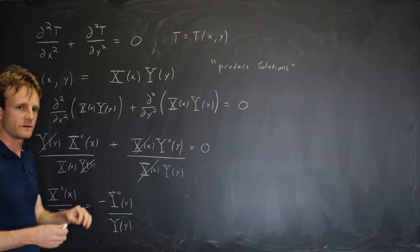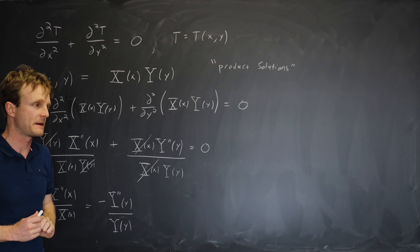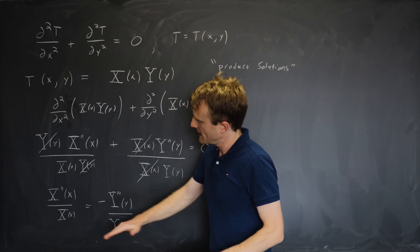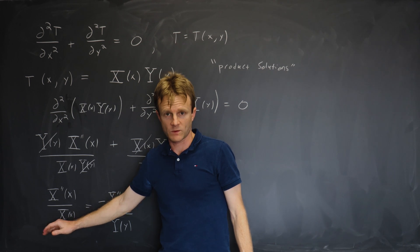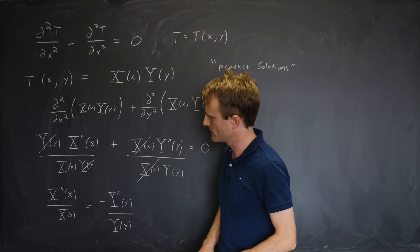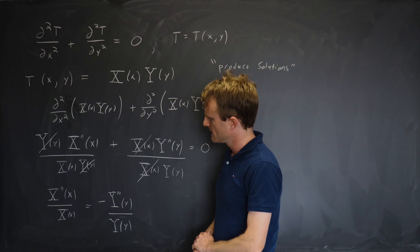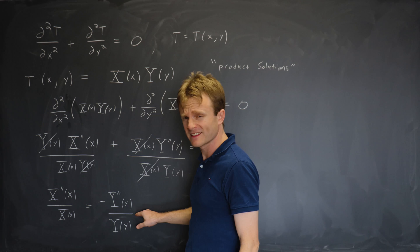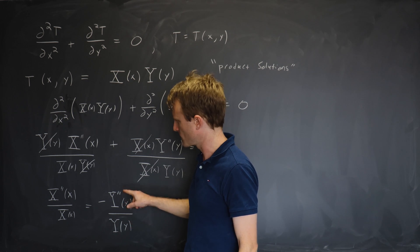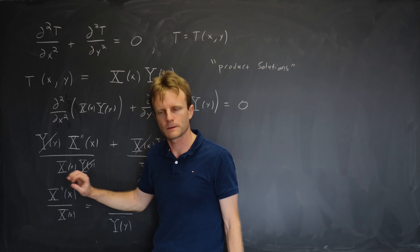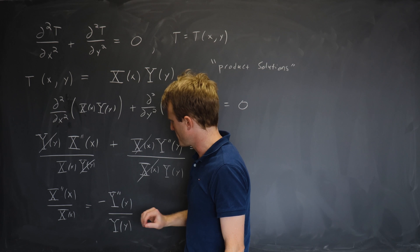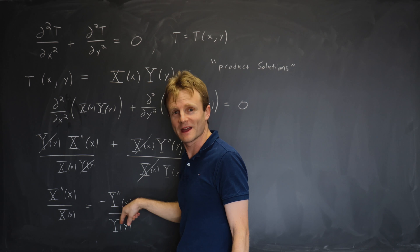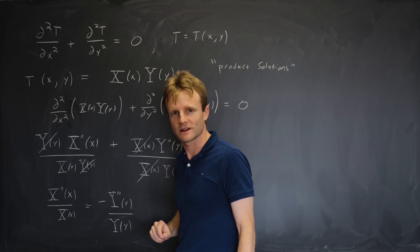Now, this is the most important part to understand about the method. The left hand side depends only on x. And the right hand side depends only on y. Now, if we imagine changing y a little bit, the right hand side can change because it depends on y. But the left hand side doesn't. But these are equal. So that means the right hand side doesn't change either. So it's actually not dependent on y. The right hand side is a constant.